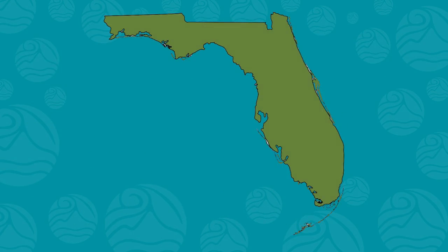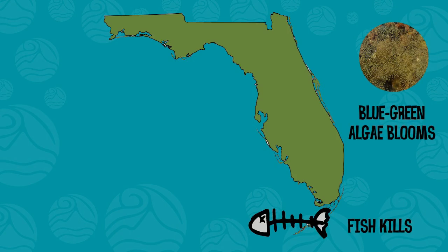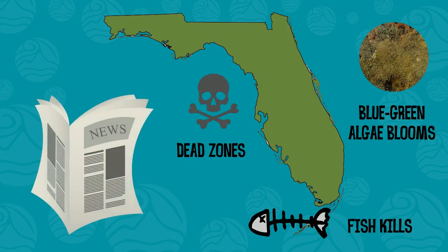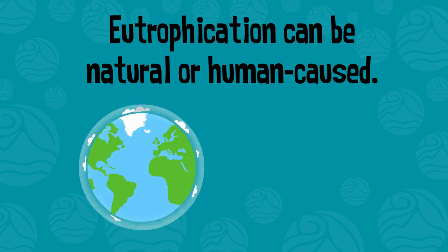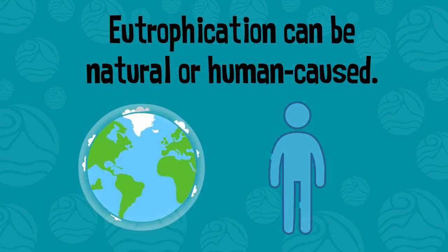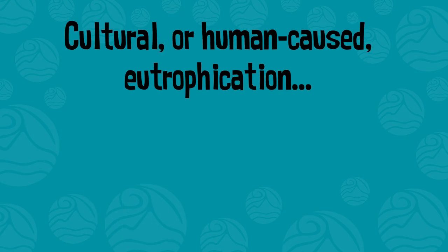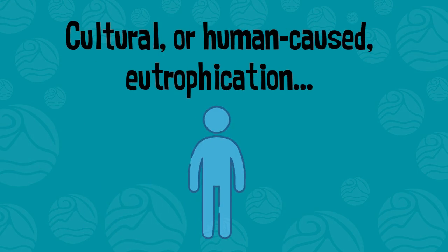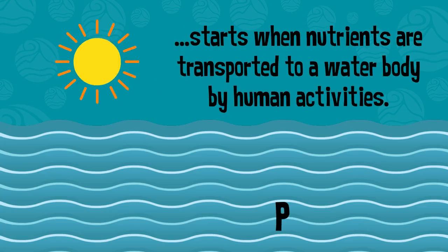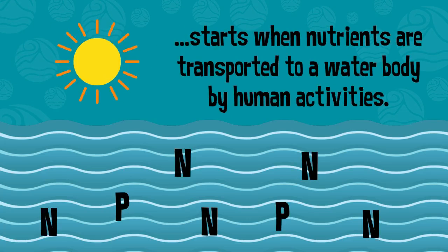Eutrophication is a big issue in Florida. Fish kills, blue-green algae blooms, and dead zones are some of the problems caused by this phenomenon that you might have heard about in the news. Eutrophication can be natural or human caused. Cultural or human-caused eutrophication starts when certain forms of nutrients like phosphorus or nitrogen are transported to a water body by human activities.